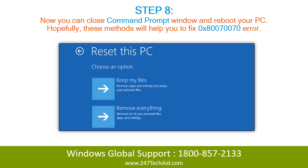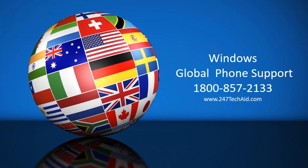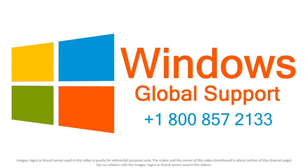Step 8: Now you can close the Command Prompt window and reboot your PC. Hopefully, these methods will help you fix the 0x80070070 error. Call now to get rid of computer problems. Global phone support: 1-800-857-2133. Windows Global Support.